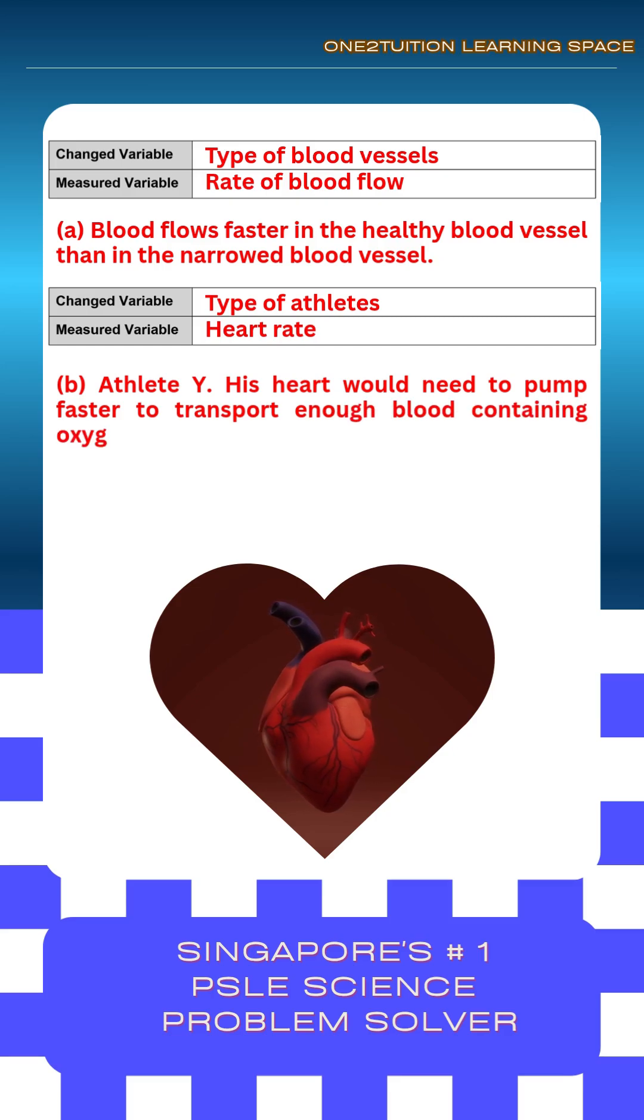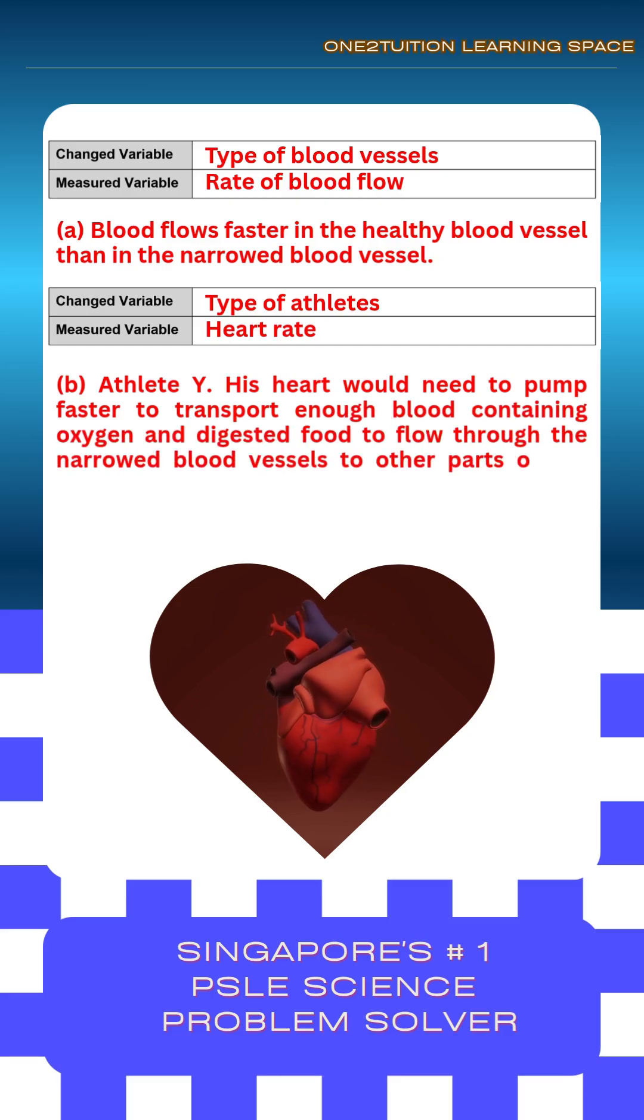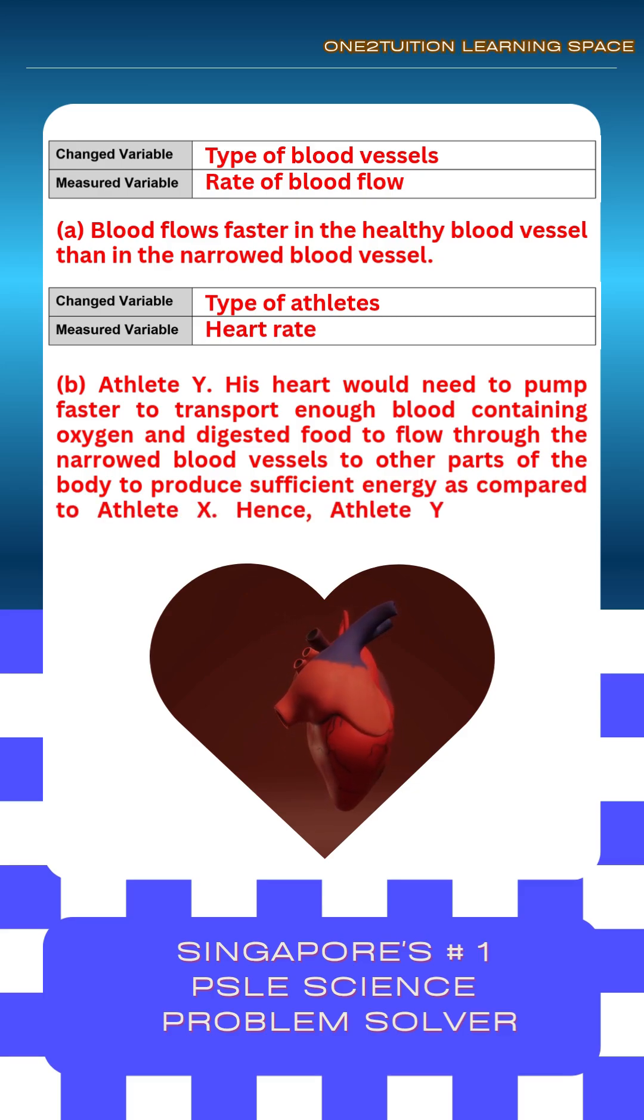His heart would need to pump faster to transport enough blood containing oxygen and digestive food to flow through the narrowed blood vessels to other parts of the body to produce sufficient energy as compared to athlete X. Hence, athlete Y has higher increase in heart rate while running as compared to athlete X.